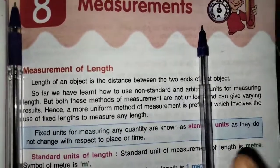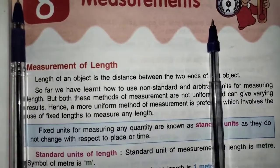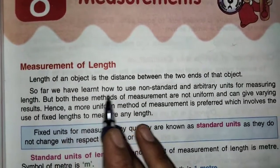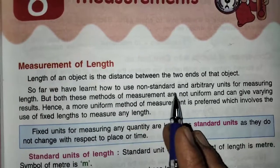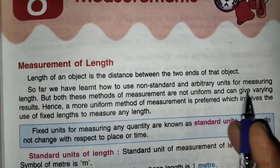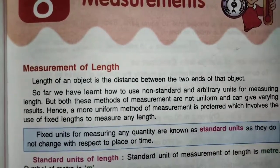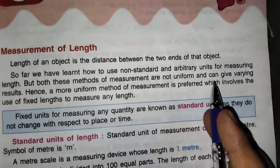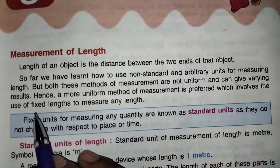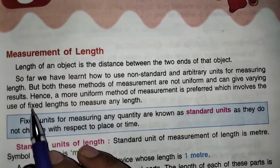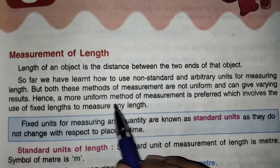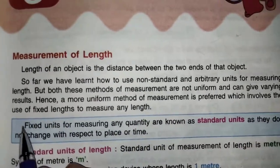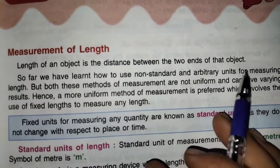Now we have to measure this. You can measure by the scale, ruler scale. So far we have learnt how to use non-standard and arbitrary units of measuring length. But both these methods of measurement are not uniform and can give varying results. Hence, a more uniform method of measurement is preferred, which involves the use of a fixed length to measure any length.